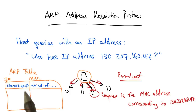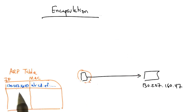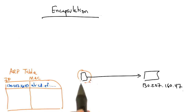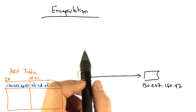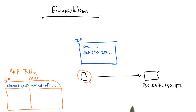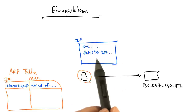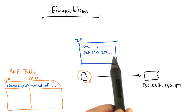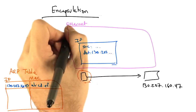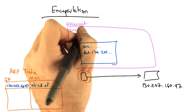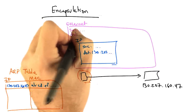Let's now take a look at what the host does with this information. When the host wants to send a packet to the destination with a particular IP address, it takes that IP packet and encapsulates it in an Ethernet frame with the corresponding destination MAC address — essentially putting that IP packet inside an Ethernet frame with its own source MAC address and the destination MAC address from its local ARP table.